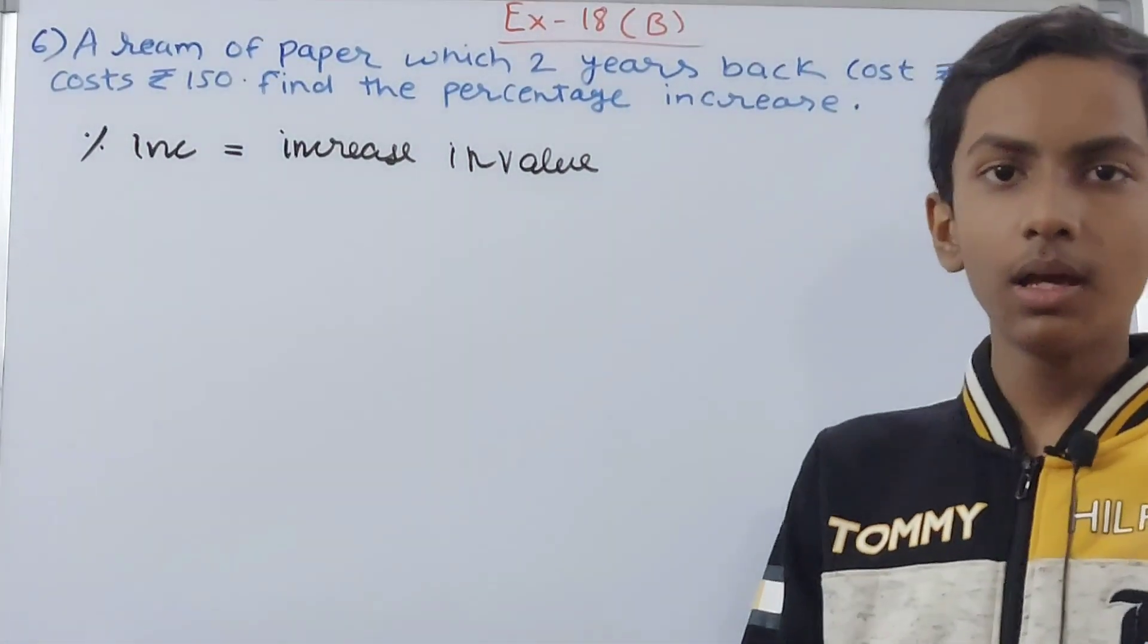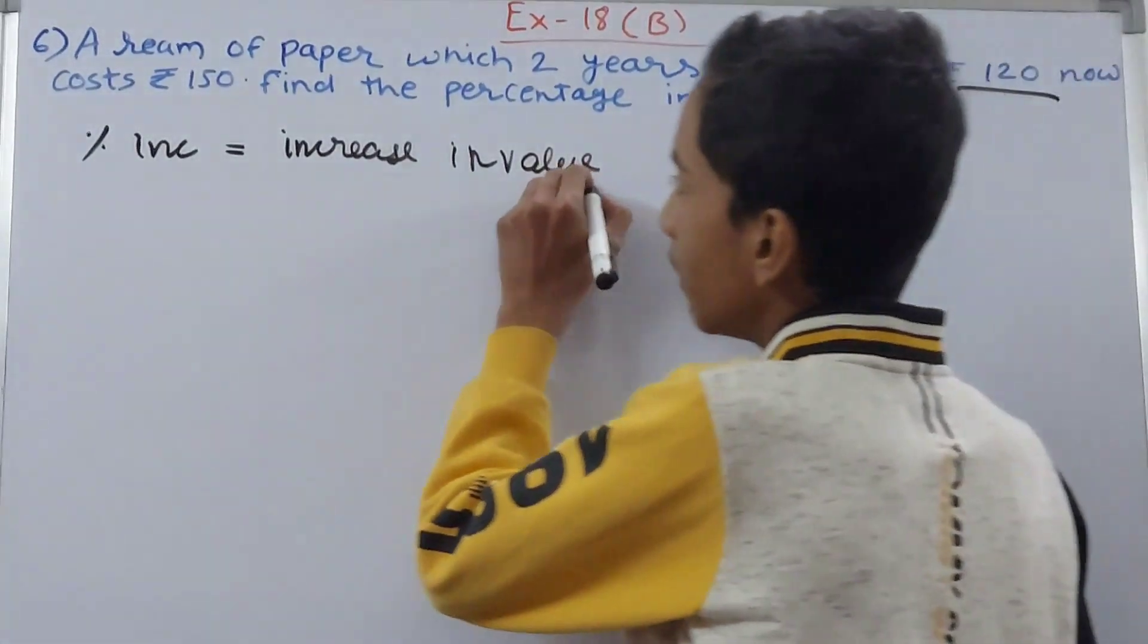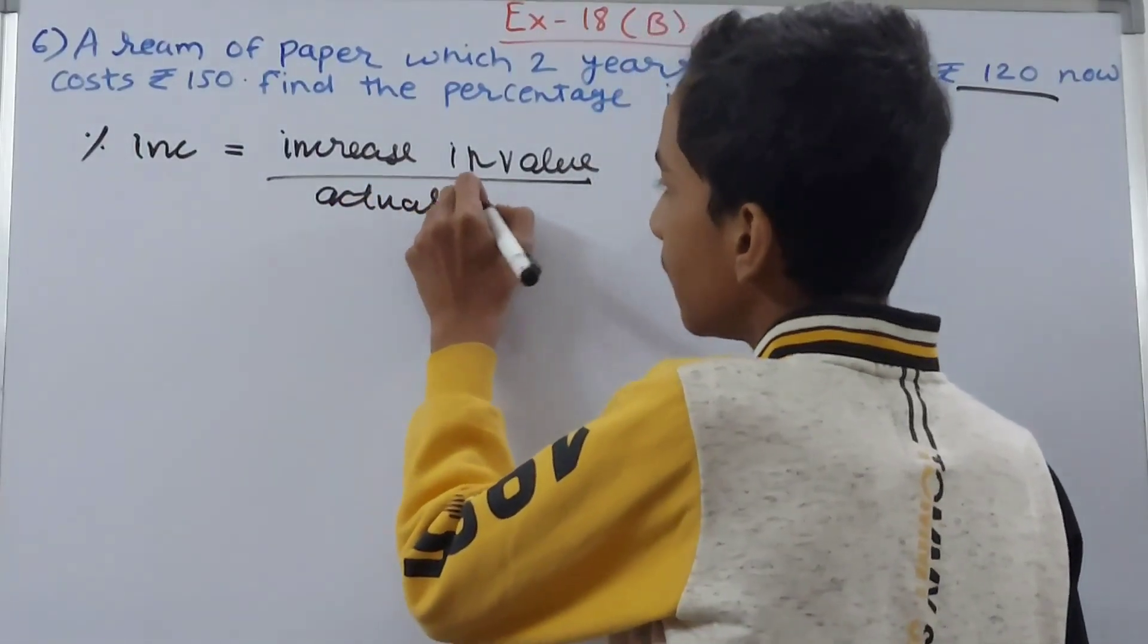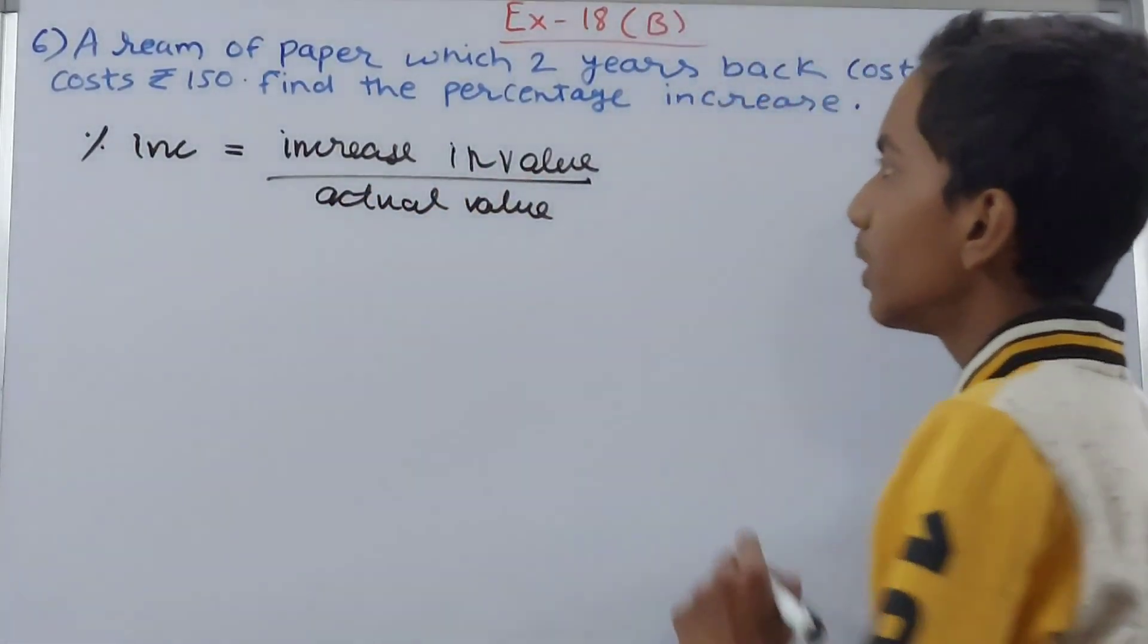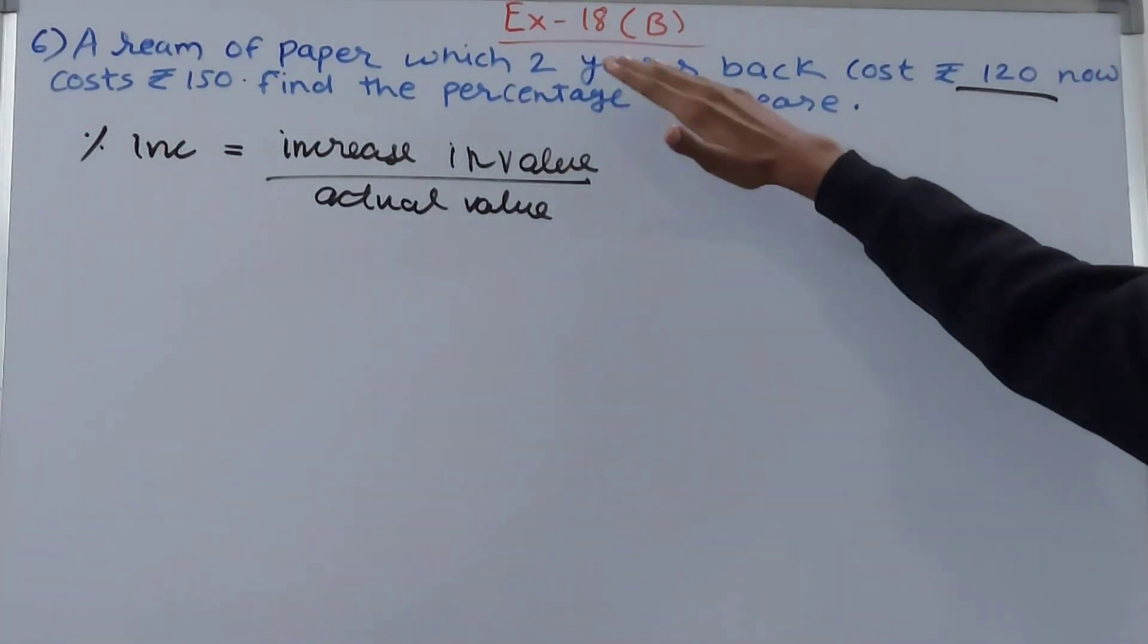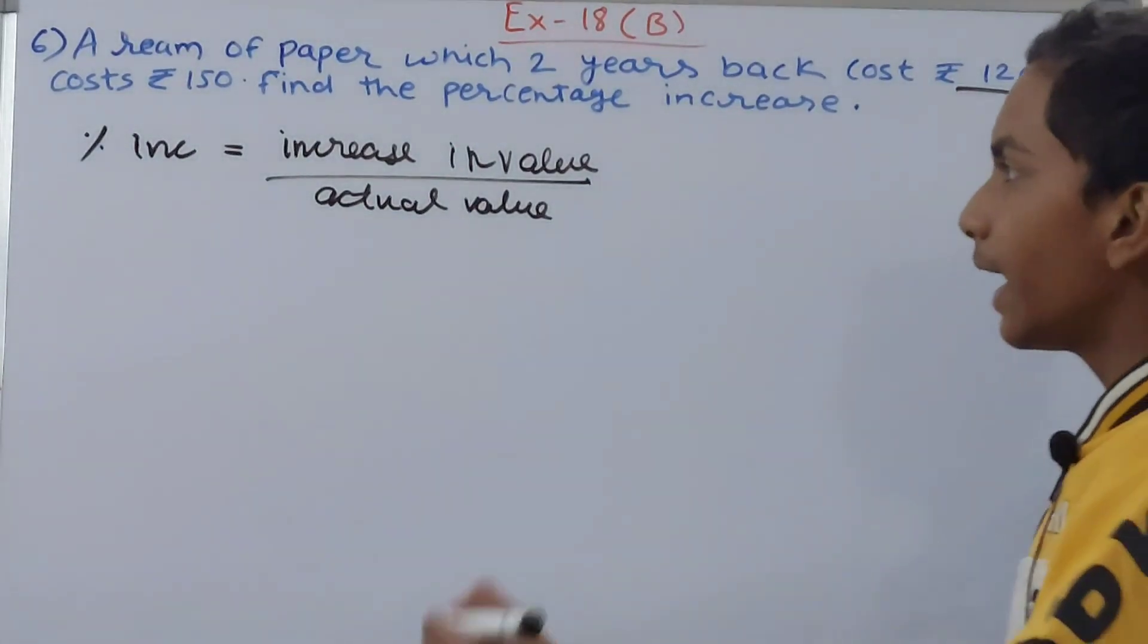You subtract the original value from the new value upon the actual value or the original value. This is the value which was given in the very start - two years back it was 120. So this becomes our actual value, and for finding percentage we always multiply it by 100.